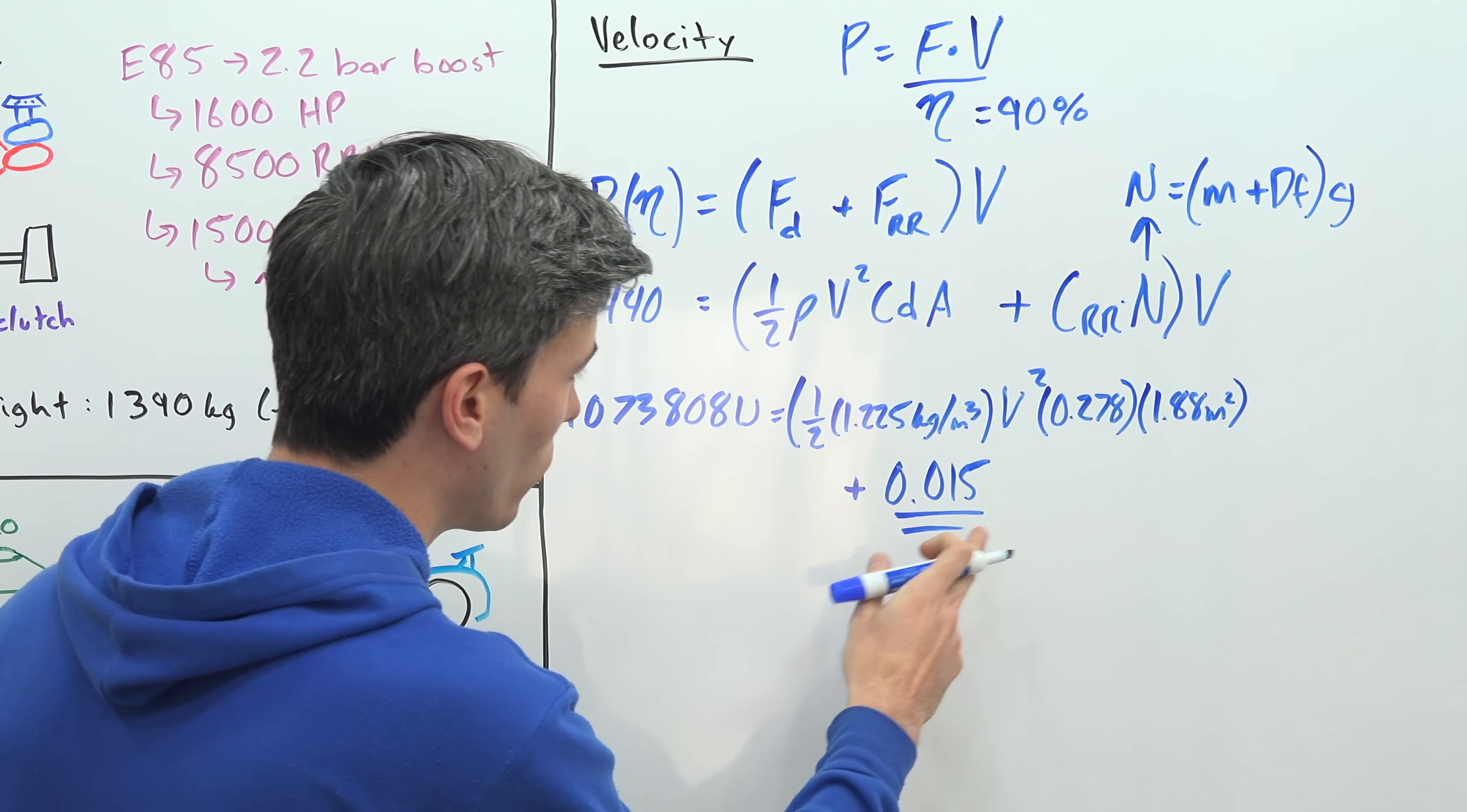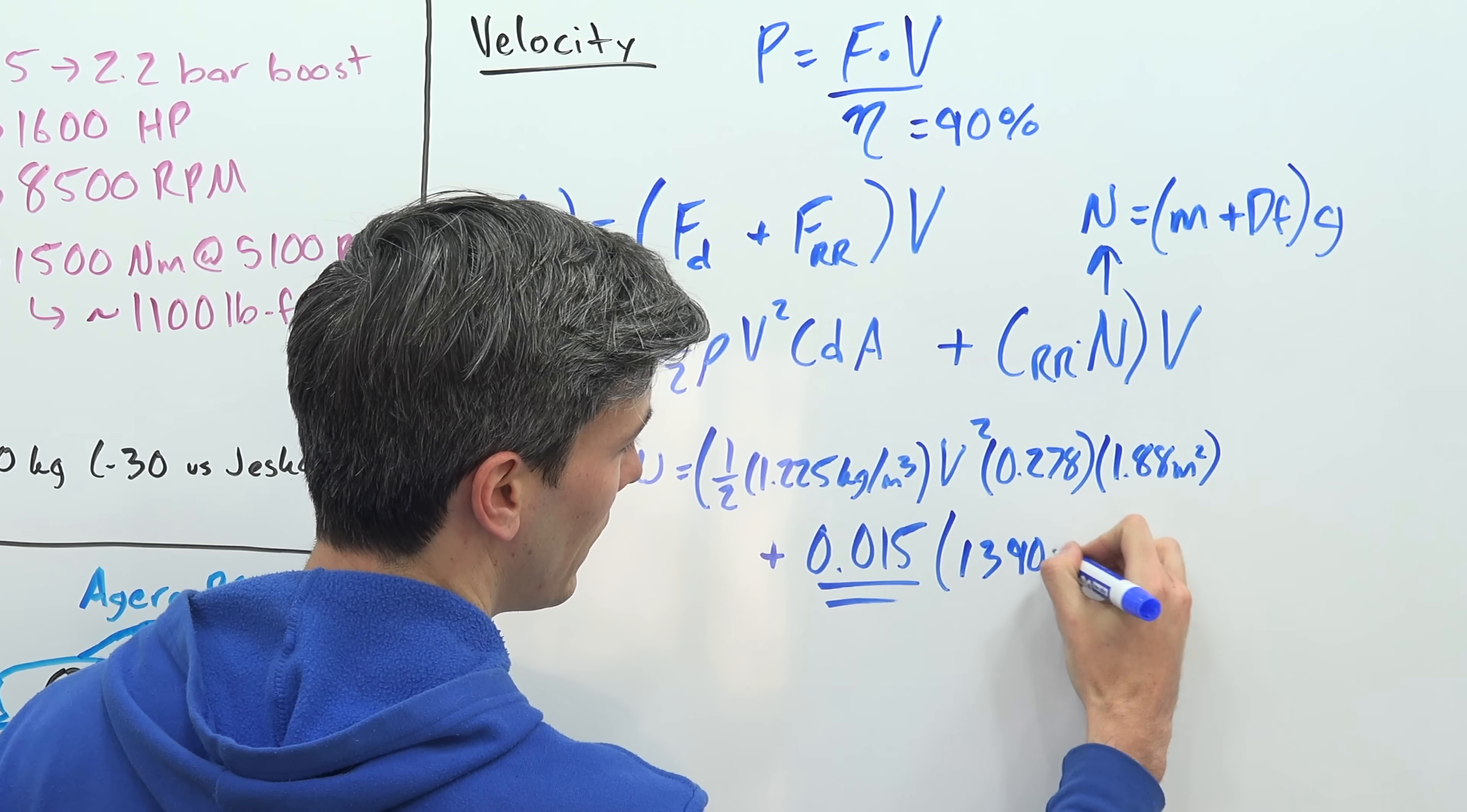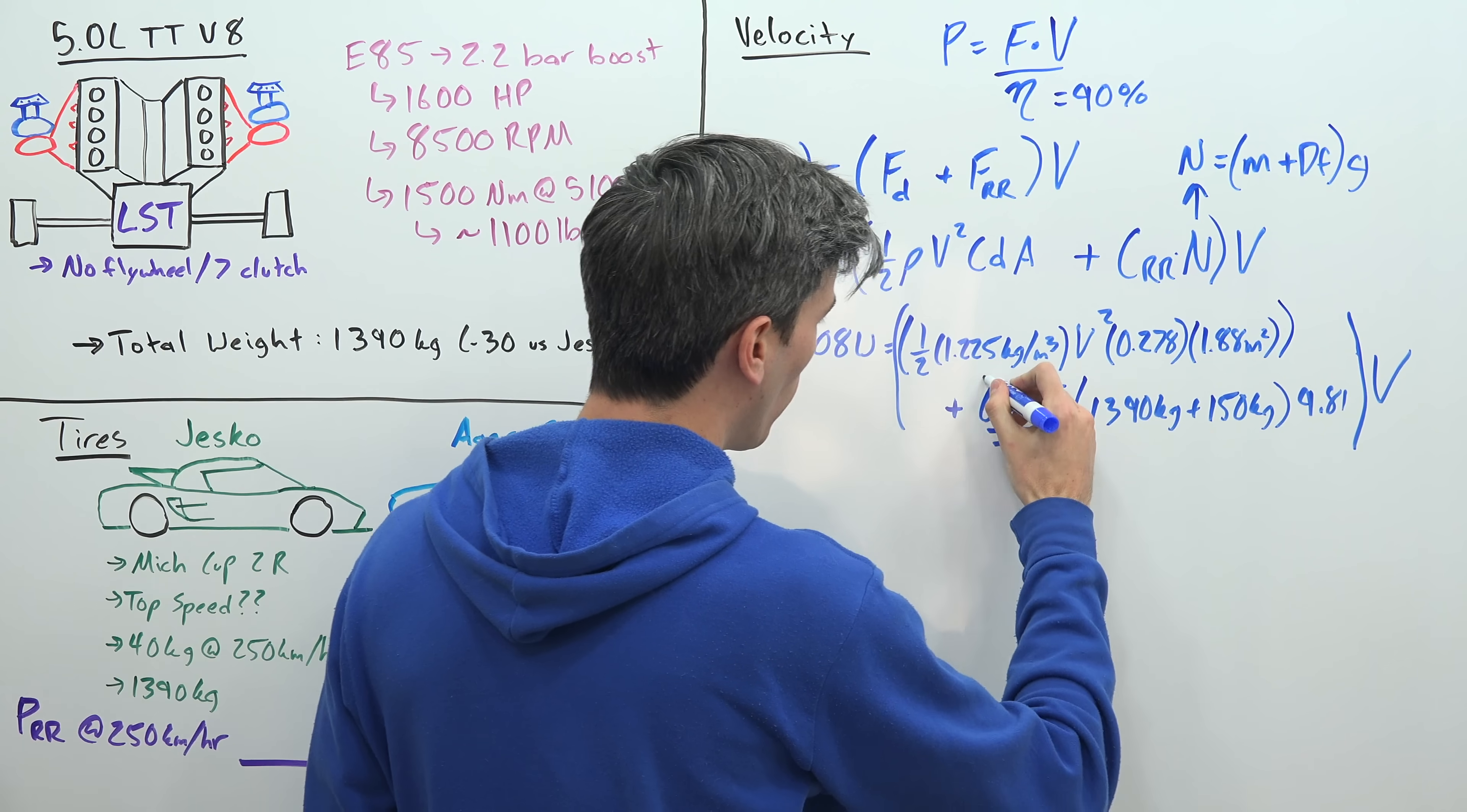And then we're going to add to that the coefficient of rolling resistance. We're going to use 0.015. This is the number I always go with - you can choose to use a slightly different number if you want. Again, this number does increase as the vehicle starts to move faster, so it could be slightly higher. This is what I always use in my videos, so that's what we're going to go with. 0.015 multiplied by our mass of the Jesko Absolute, which is 1390 kilograms, plus the downforce, which they say the max downforce is 150 kilograms, multiplying that by gravity, 9.81. And then we're going to multiply this entire section here by our velocity.